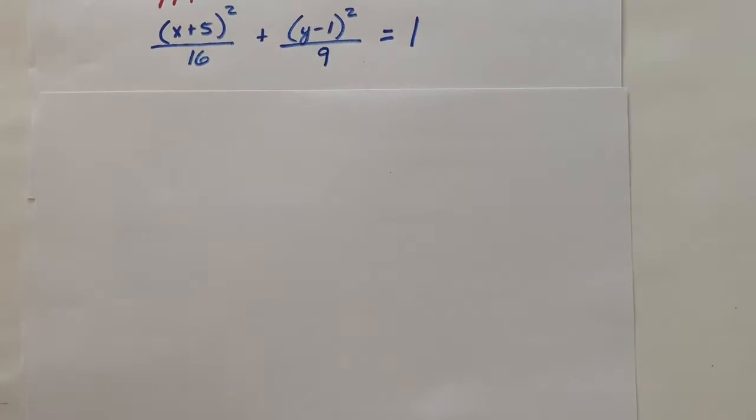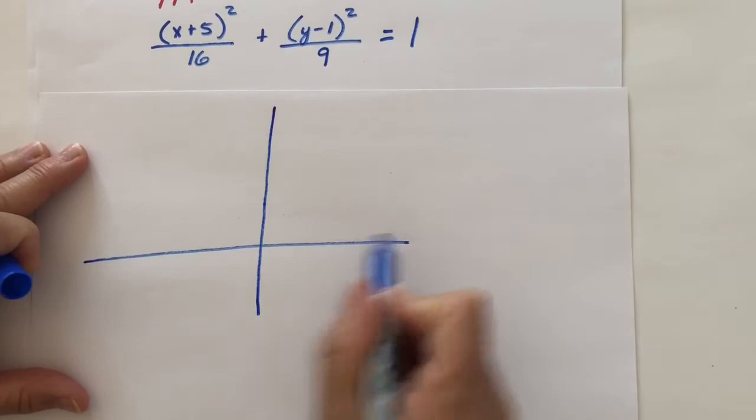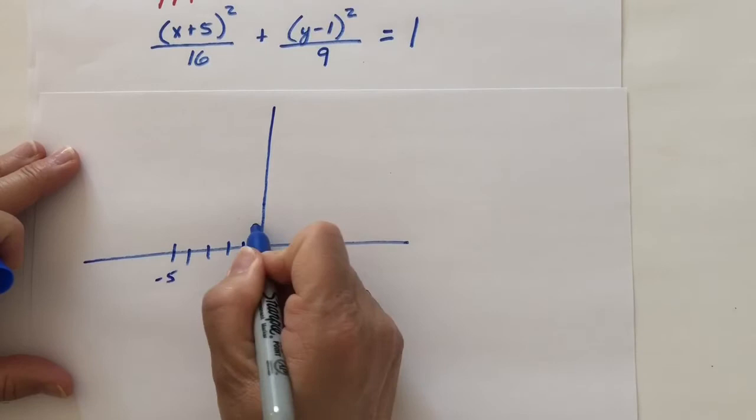Notice our center will be at (-5, 1). So here's our graph. Negative 5. Negative 5 right here. 1 here. Here's our center.